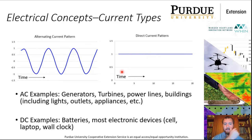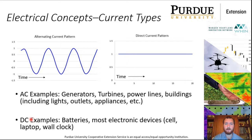Examples of AC include generators, turbines, power lines, and buildings — any barn, house, or appliances that plug into the wall run on AC. DC, on the other hand, is what we'll focus on most. Batteries are DC. Cell phones, laptops, wall clocks, and the batteries that provide startup power for field equipment, construction equipment, or your car are all DC power.